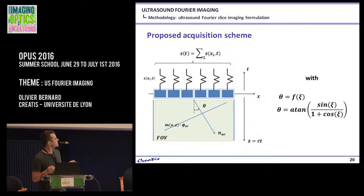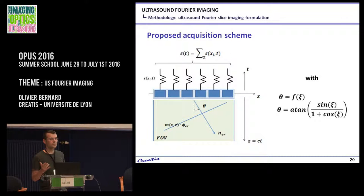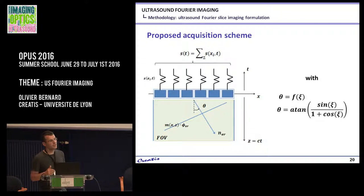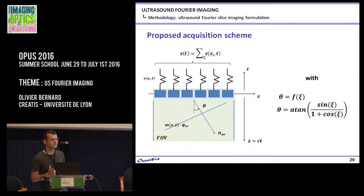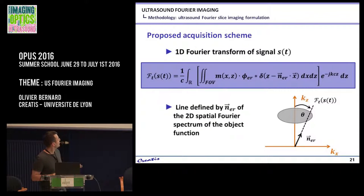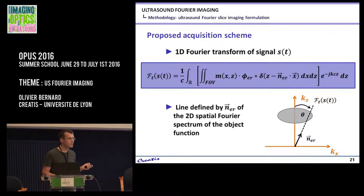Since n_er can be varied because in reception you do what you want, you will play with the xi value. Then you are able to integrate with different angles. Then what remains to be done: for this St signal, you do the 1D Fourier transform.